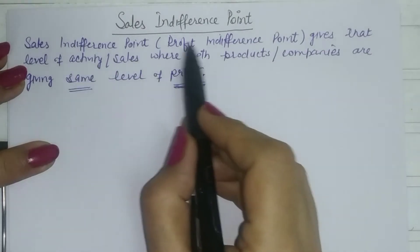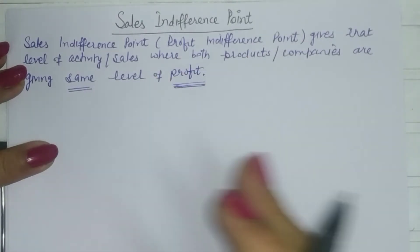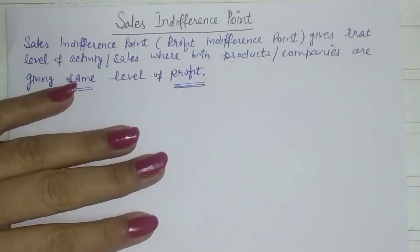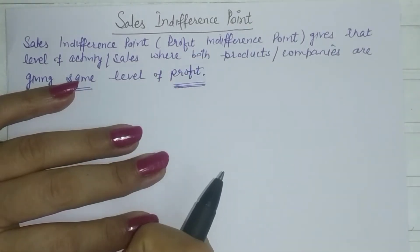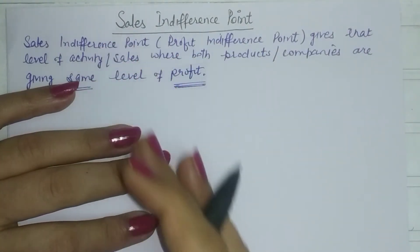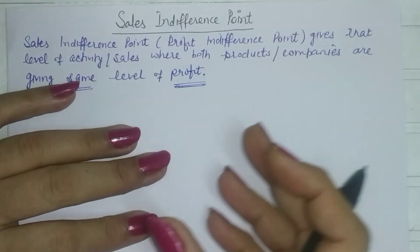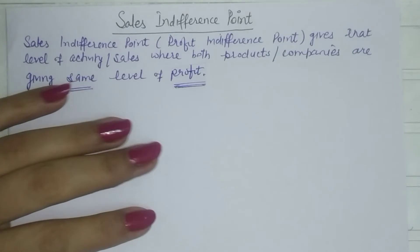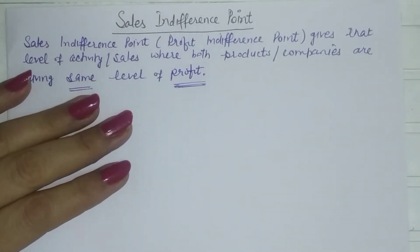The sales or profit indifference point gives us that level of activity where both products or companies are giving the same level of profits. In management decisions, we come across situations regarding a choice between two product lines or a choice between two companies where we have to make an investment and select one.